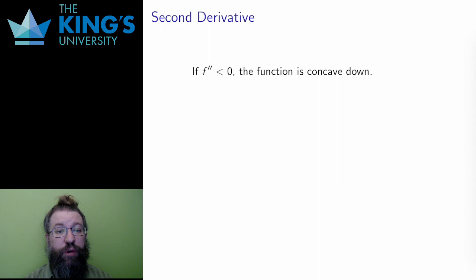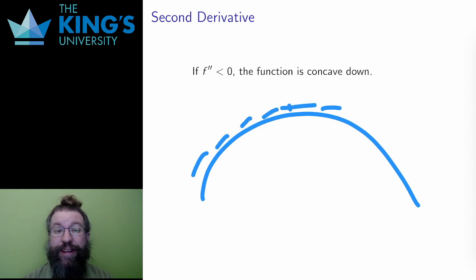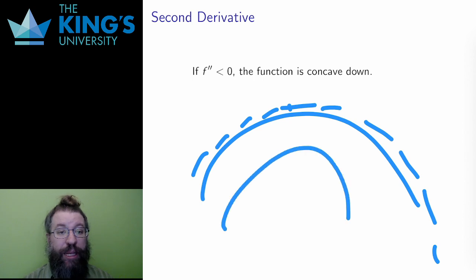Let me do the same thing for a negative second derivative. If the second derivative is negative, the slope is decreasing. So a steep positive slope is getting closer and closer to zero, and a negative slope is getting steeper and steeper. The resulting shape of the graph is curving down, which is called concave down.